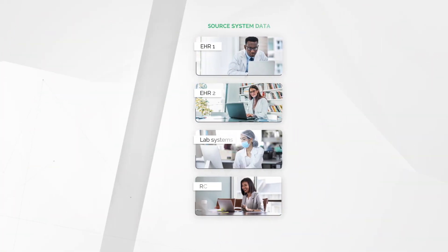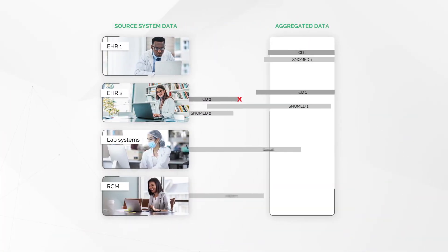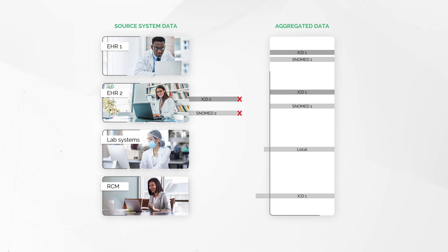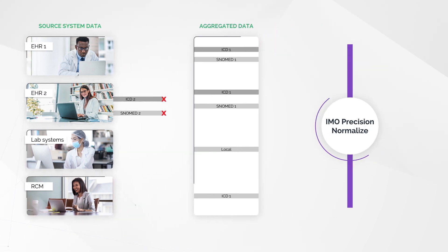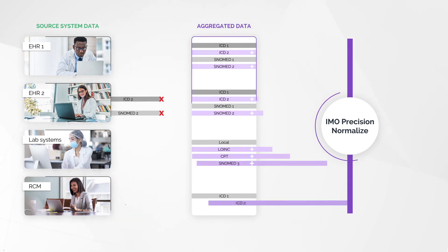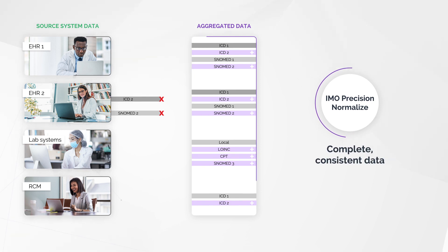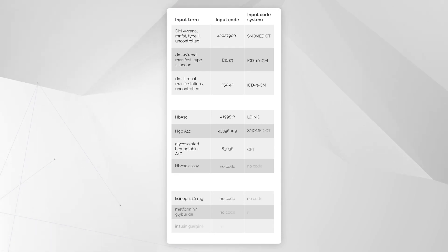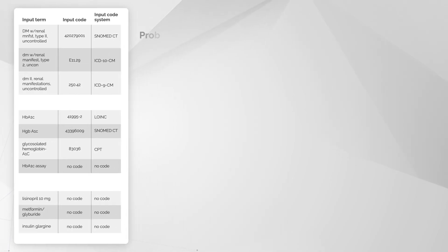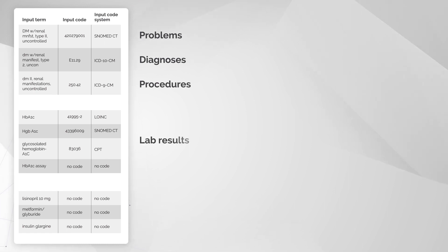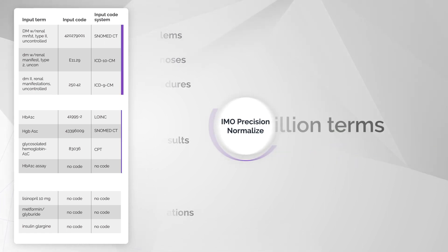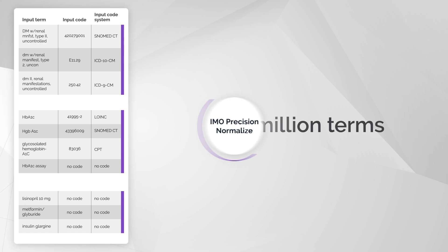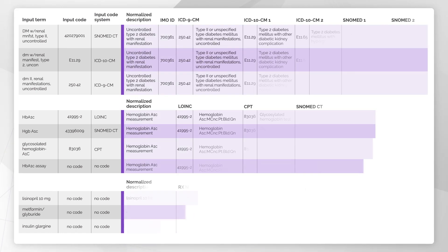IMO Precision Normalize leverages this powerful clinician-curated terminology to help preserve the clinical intent and specificity that so often go missing as patient data is shared and transferred from one system to another. IMO Precision Normalize compares the words and codes used to document problems, diagnoses, procedures, lab results, and medications against IMO's millions of terms, standardizing each piece of data to a common definition.